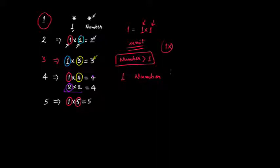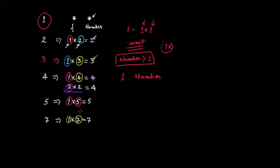So this is all about prime numbers. What would be the next prime number after 5? The next prime number after 5 would be 7. Because 1 multiplied by 7 gives 7, and there are only two factors — 1 and 7 — with no other factors possible for 7.